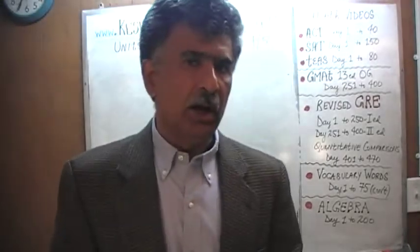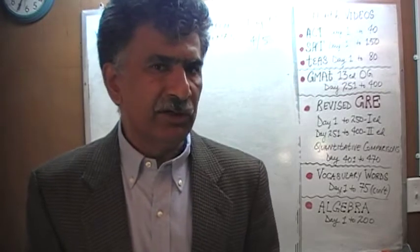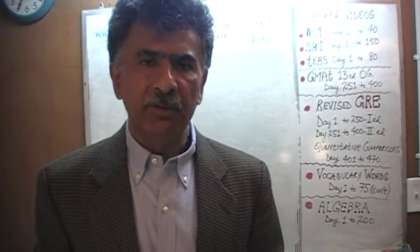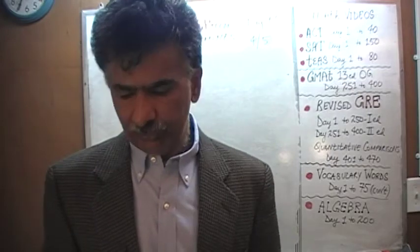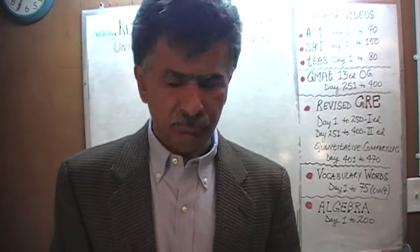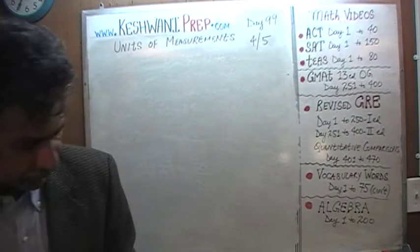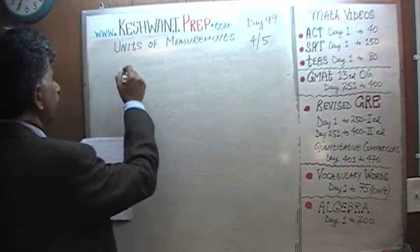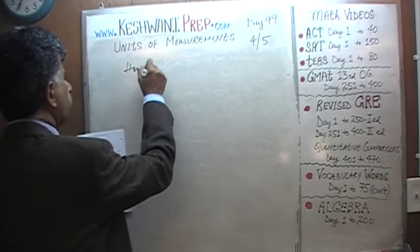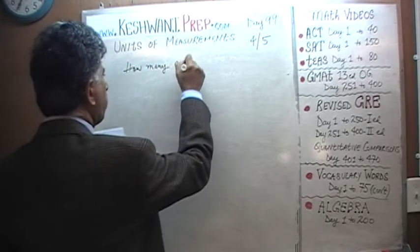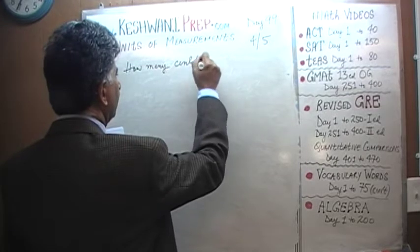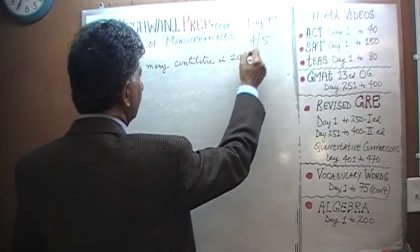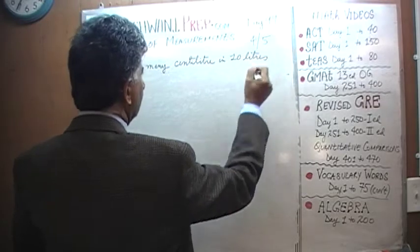Units of measurement — how to convert, how to go about converting English units into metric units and metric units into English units. We are going to do a few problems today just for some practice. Here is the very first one: how many centiliters in 10 liters?